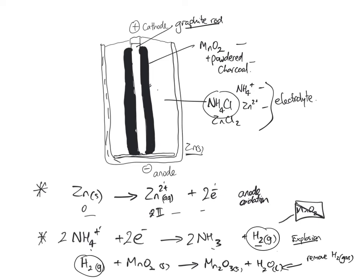The main two that are involved in the cell are this one and this one. Here zinc is oxidized at the anode, and this one here ammonium is reduced at the cathode. The cathode is this central part of the battery cell.